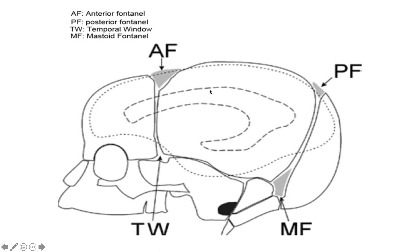We have six fontanels: you have the anterior fontanel, the posterior fontanel, the temporal fontanel, and the mastoid. Of course we have two of each side, so a total of six.